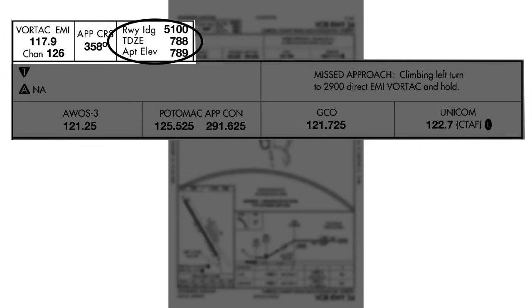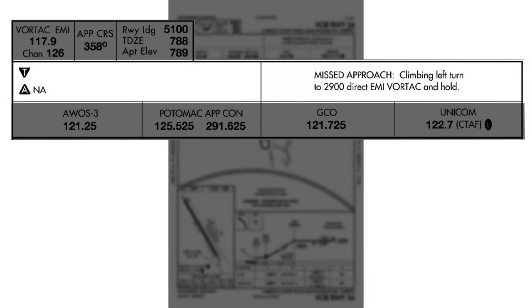The acronym TDZE stands for touchdown zone elevation, which is 788 feet, and then an airport elevation of 789 feet. Note that the airport elevation and touchdown zone elevation differ slightly because different parts of the airport are at different elevations. Moving down to the middle strip, over on the left are procedure notes. On this procedure there's not a lot — just a couple of symbols: the upside-down black triangle with a T, the regular triangle with an A, and NA next to it. You'd see things like equipment requirements, indicators for takeoff or alternate minimums, and exceptions for helicopter approaches.